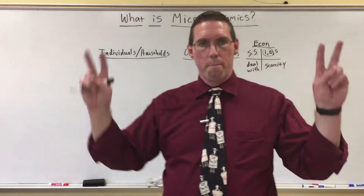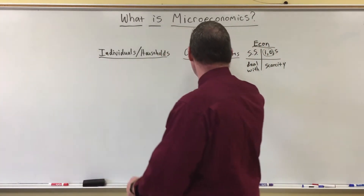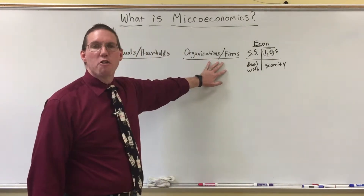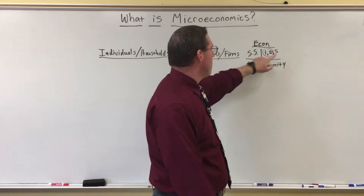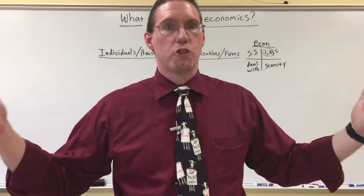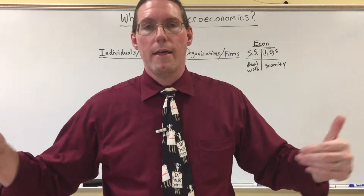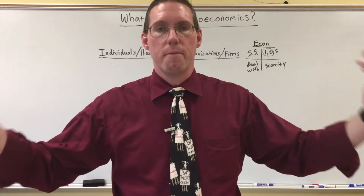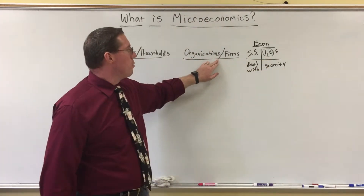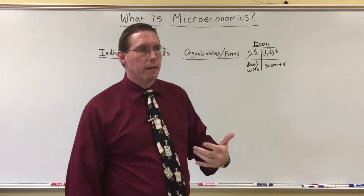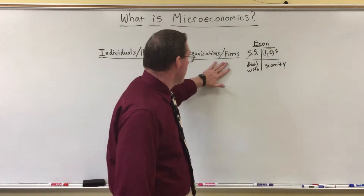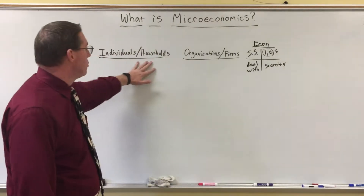Firm is an old school word for business. We're talking about businesses and organizations — these are groups of people, kind of small groups of people. If we were talking about large groups of people, we could talk about societies, like an entire state — like Georgia or Florida. That's millions and millions of people. Organizations, even though some might have 500,000 people, it's still a smaller group. So businesses and organizations, and then individuals and households.